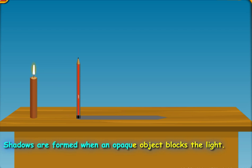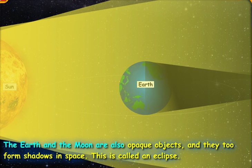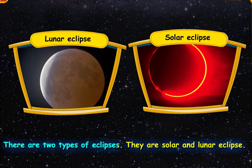Shadows are formed when an opaque object blocks the light. The earth and the moon are also opaque objects and they too form shadows in space. This is called an eclipse. There are two types of eclipse. They are solar and lunar eclipse.